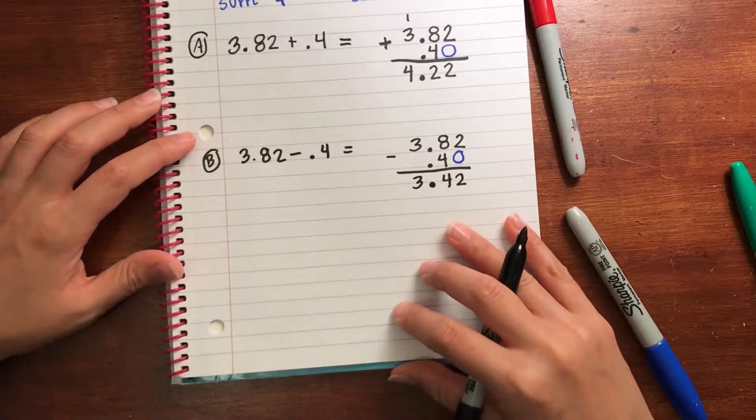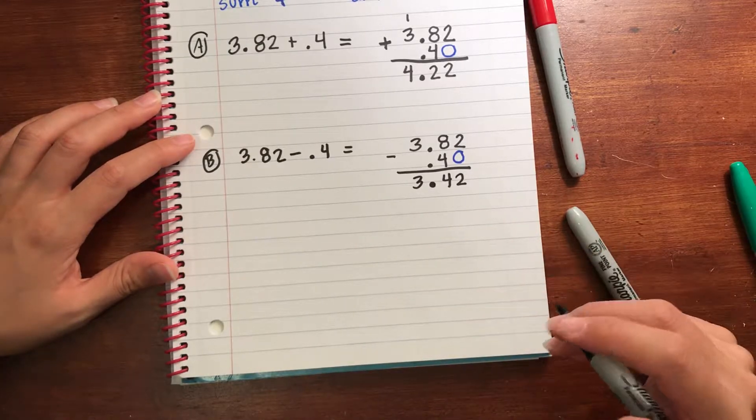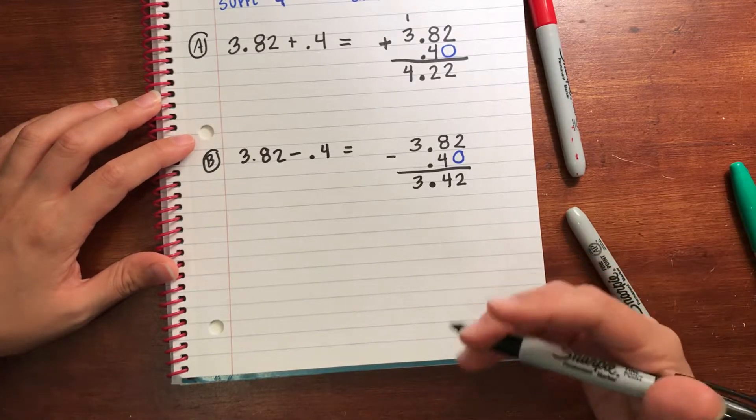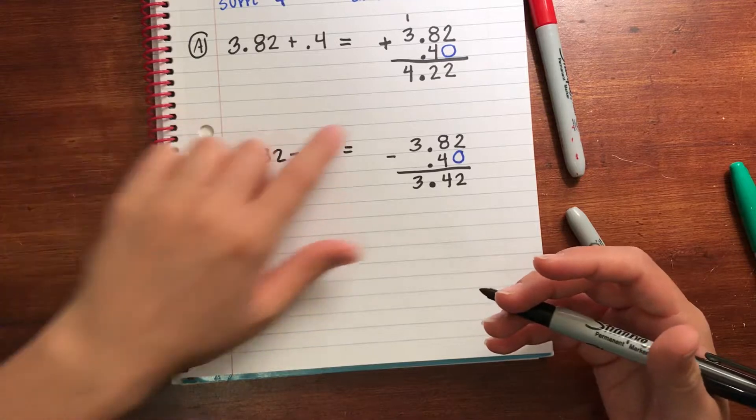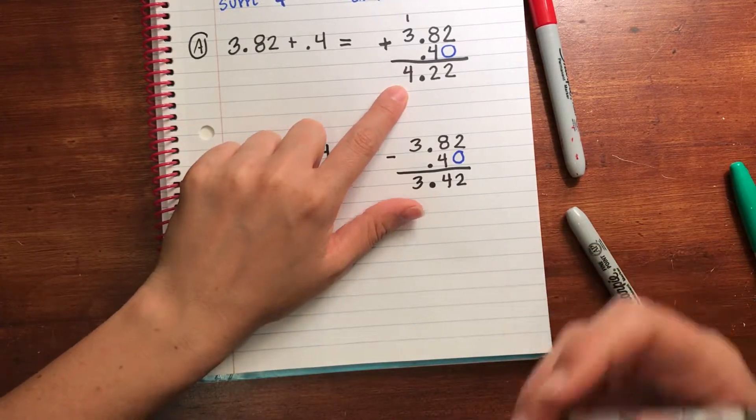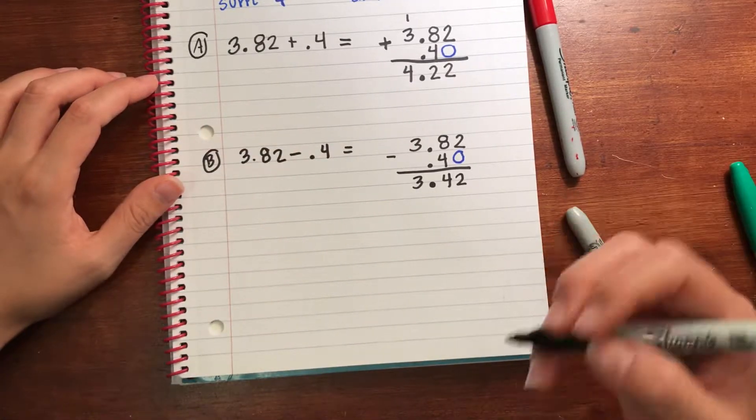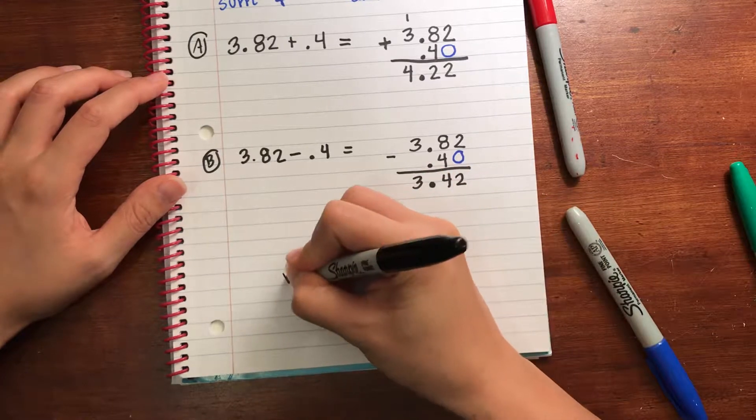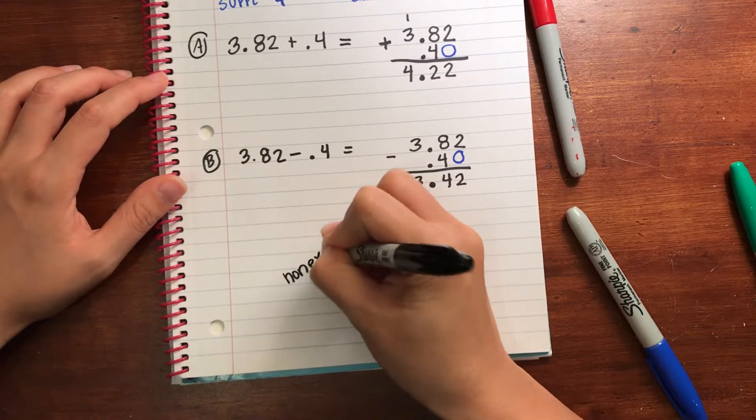Now one thing I want to show as a non-example is lining up the digits not the decimals and we'll see what happens. Let's try the addition problem with lining up the digits not the decimals. So this is a non-example, so do not do this.